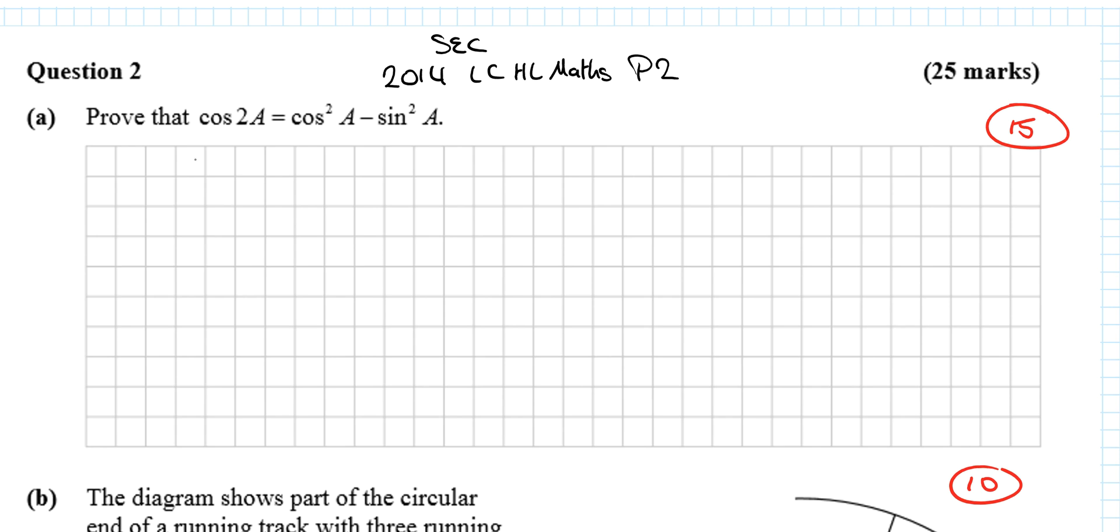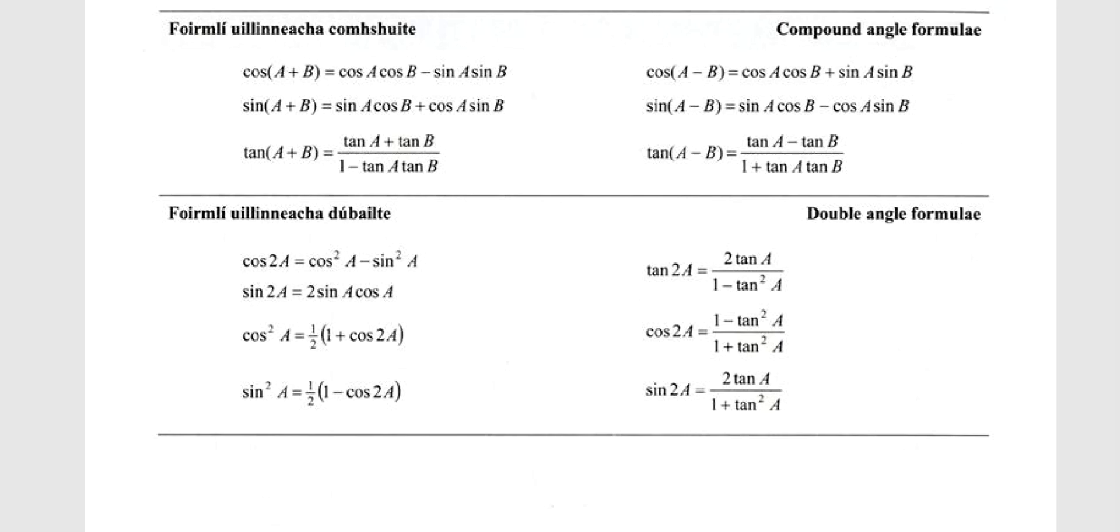To begin with though, you need to realize that you're going to use cos(A+B) equals cos A cos B minus sin A sin B. And where that is, is actually in the log tables.